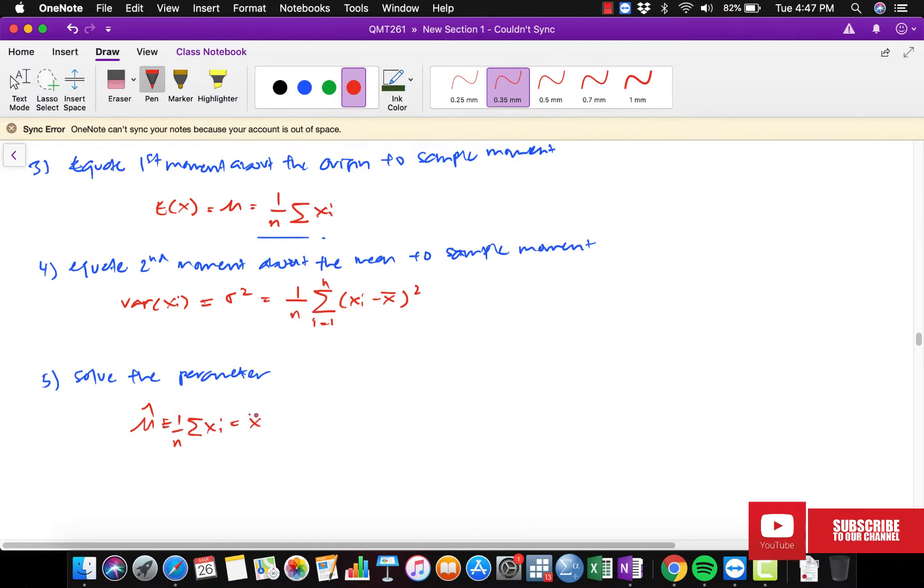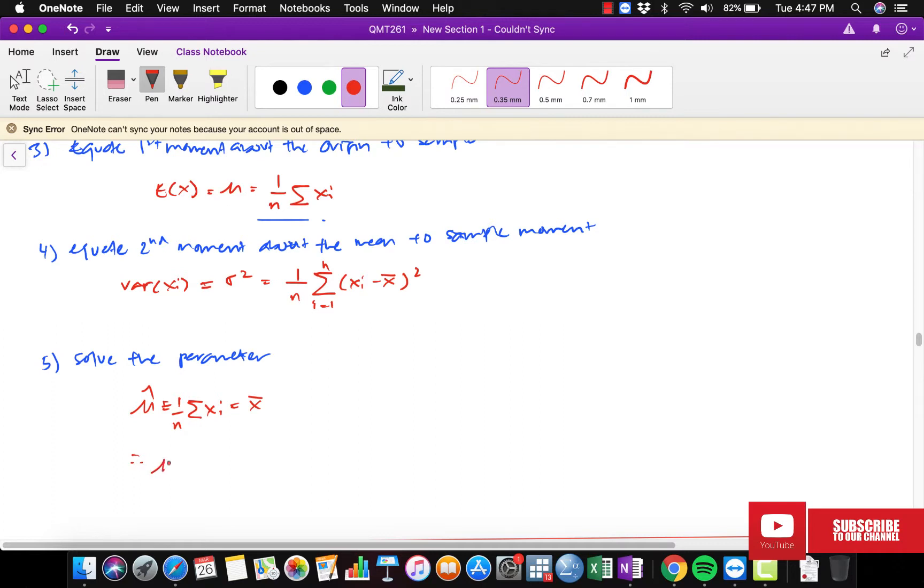So we can say that the parameter of mu equals X bar. And for variance, it is equal to 1 over n summation of (Xi minus X bar) squared. So this is the parameter, the estimator for mu and sigma squared for a normal distribution.